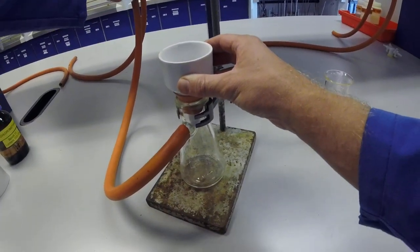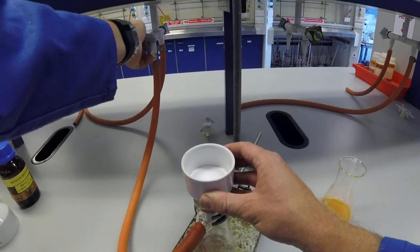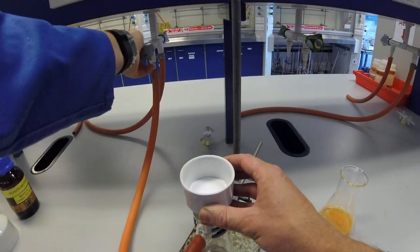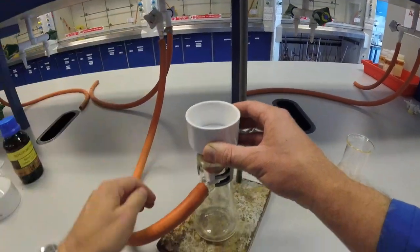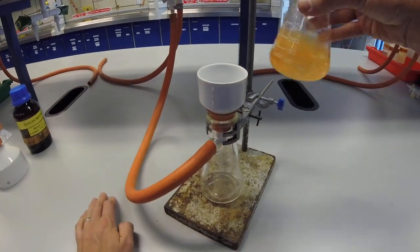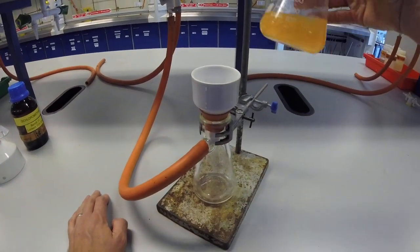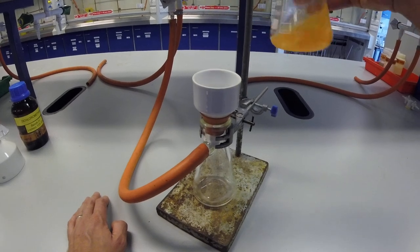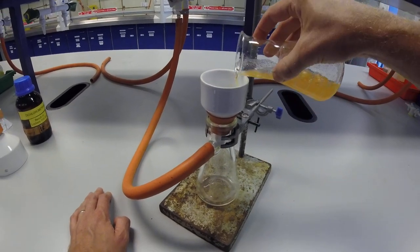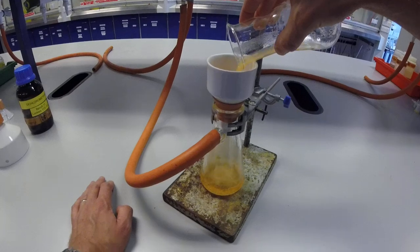So then we're going to turn our vacuum on. So we've got the vacuum running, and now we swirl, make sure we swirl the flask to kick up all the solids that are present, and then quickly pour in.